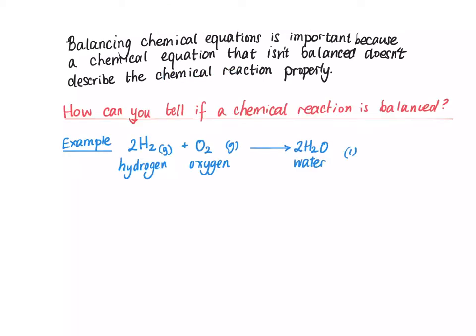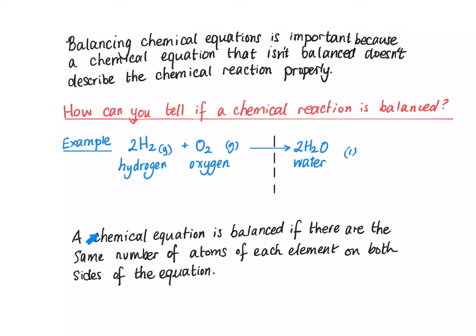This is the example we're going to use: hydrogen and oxygen react together to give water. A chemical reaction is balanced if there are the same number of atoms of each element on both sides of the equation.